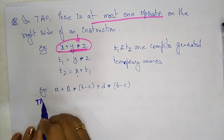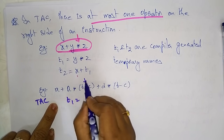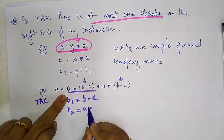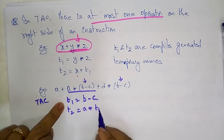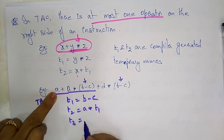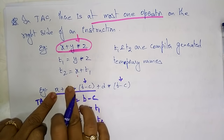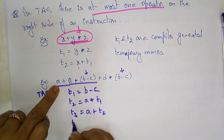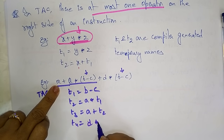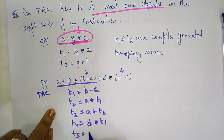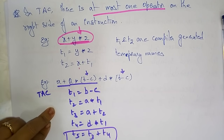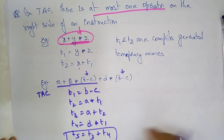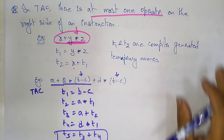Now let's take a larger example. The three address code for this equation is: t1 = b - c; t2 = a * t1, because b - c is t1; t3 = a + t2, writing t2 instead of the full sub-expression; t4 = d * t1; and t5 = t3 + t4. So we are just breaking the expression into separate instructions so that the compiler can easily convert it into assembly-level language. This is the main use of the three address code.